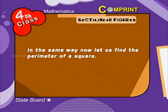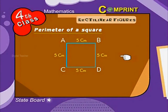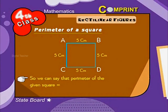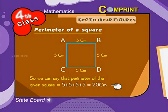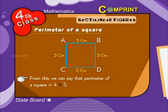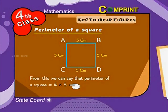Now let us find the perimeter of a square. A square consists of equal measurements on all 4 sides. So we can say that the perimeter of the given square is equal to 5 plus 5 plus 5 plus 5, which is equal to 20 centimeters. From this we can say that the perimeter of a square is equal to 4 into S, where S is equal to side.